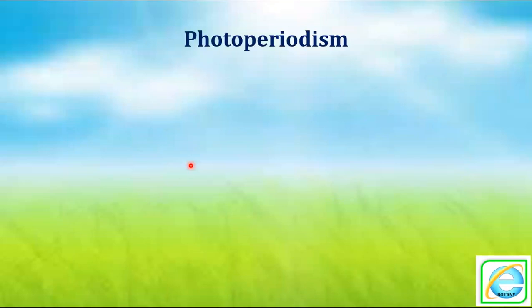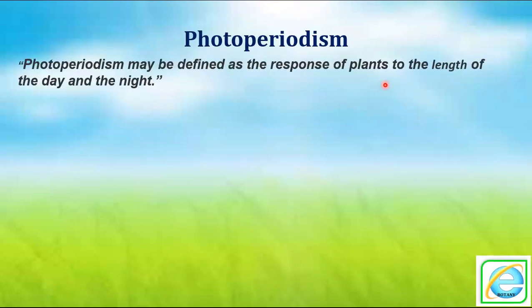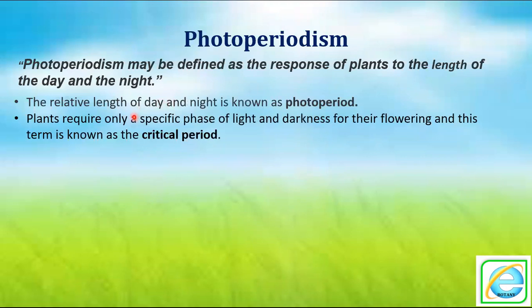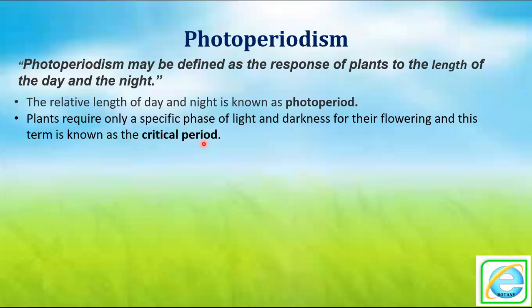Next is photoperiodism — the response of a plant to the length of day and night. Photoperiod is the relative length of day and night. Critical period is the specific phase of light and darkness required by the plant for flowering. The relative length of day and night is called photoperiod.